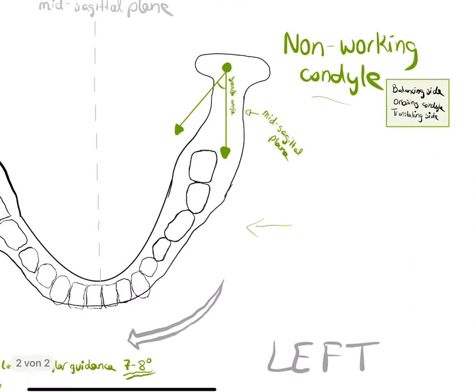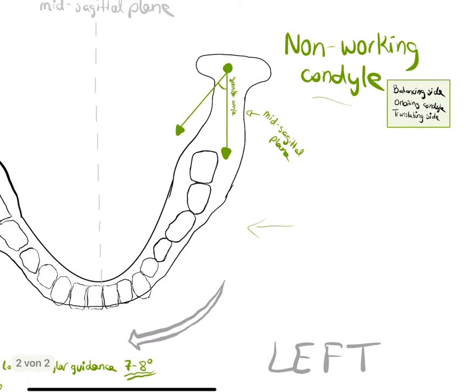So this condyle has a mediotrusive movement. The condyle moves medially until it comes in contact with the medial wall of the glenoid fossa, then moves downwards, forwards, and medially.